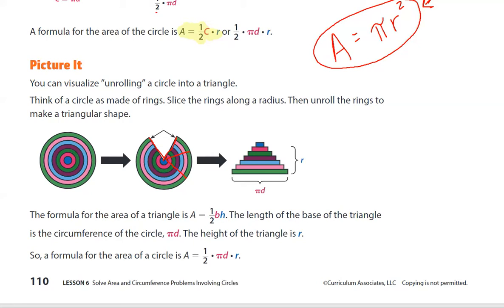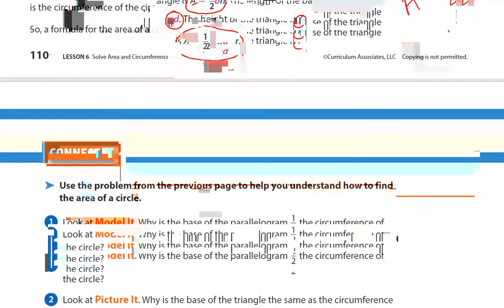Then unroll the rings to make a triangular shape. The formula of the area of a triangle is one half base times the height. The length of the base of the triangle is the circumference of a circle, pi times diameter. And the height of the triangle is the radius. So the formula of the area of a circle is one half times the circumference times the radius, or pi times the radius squared.